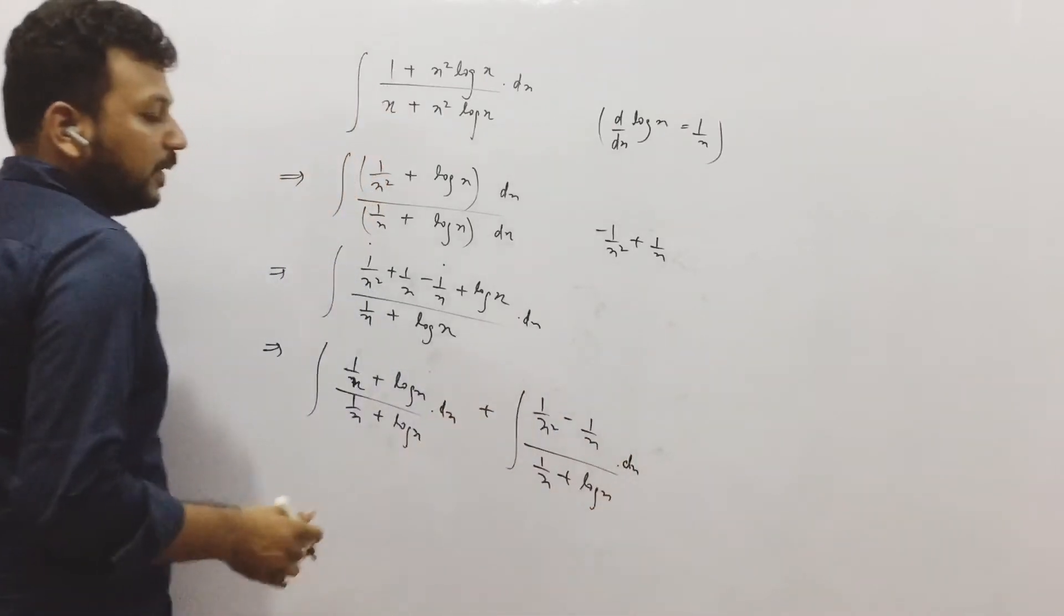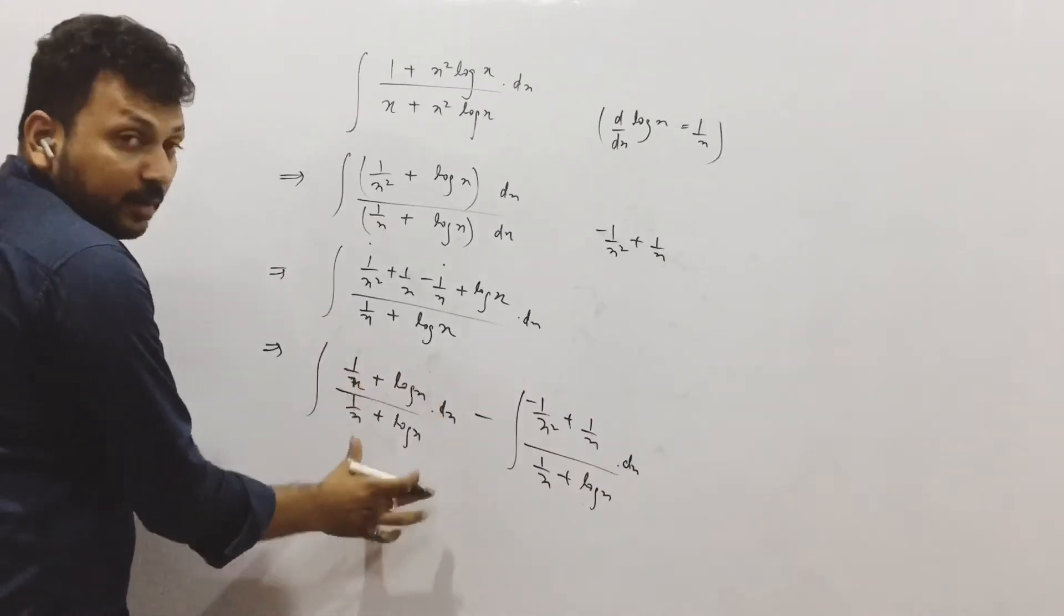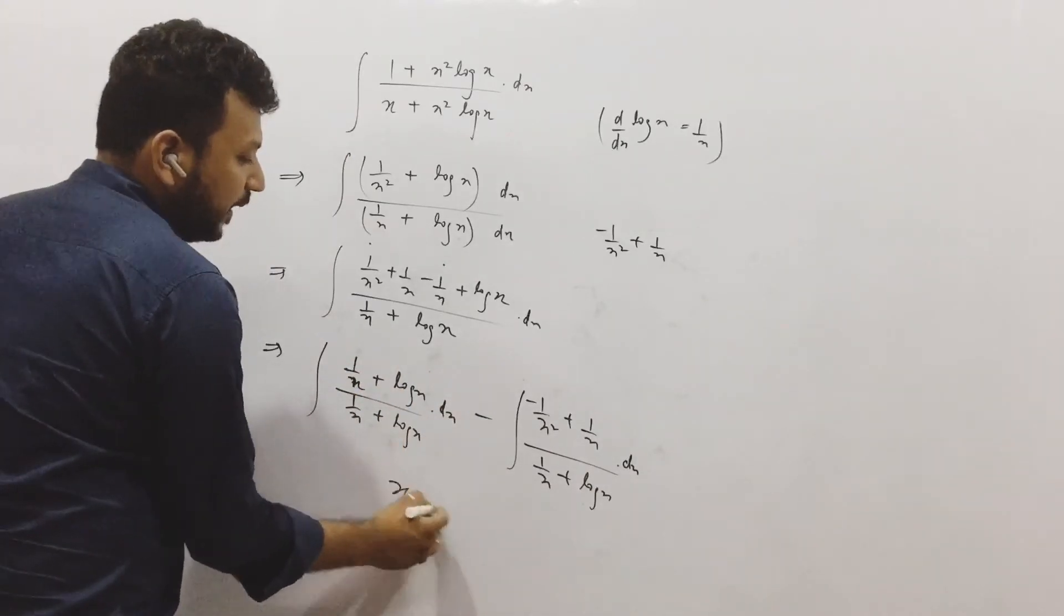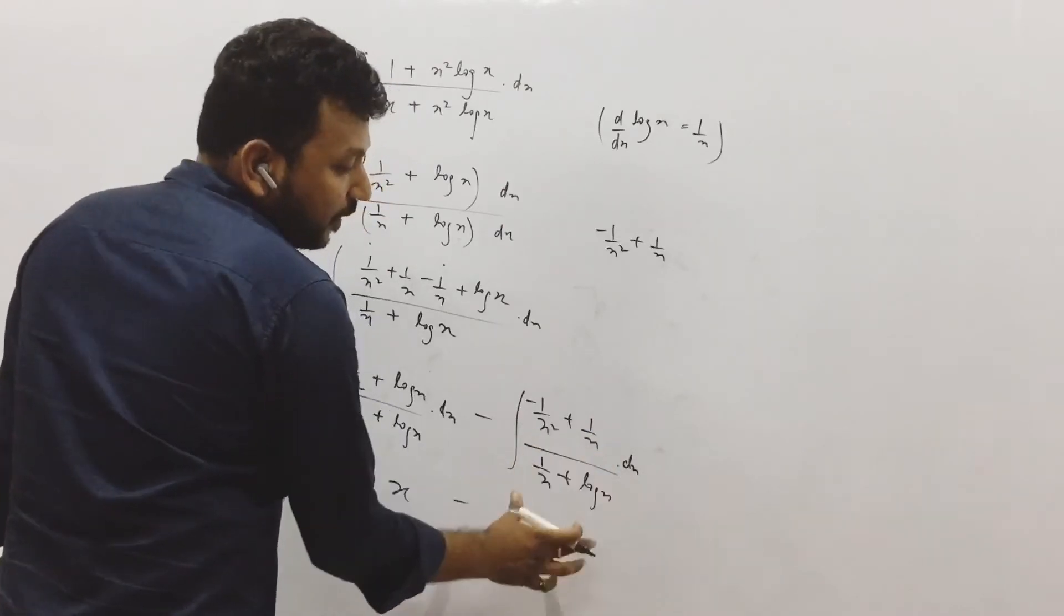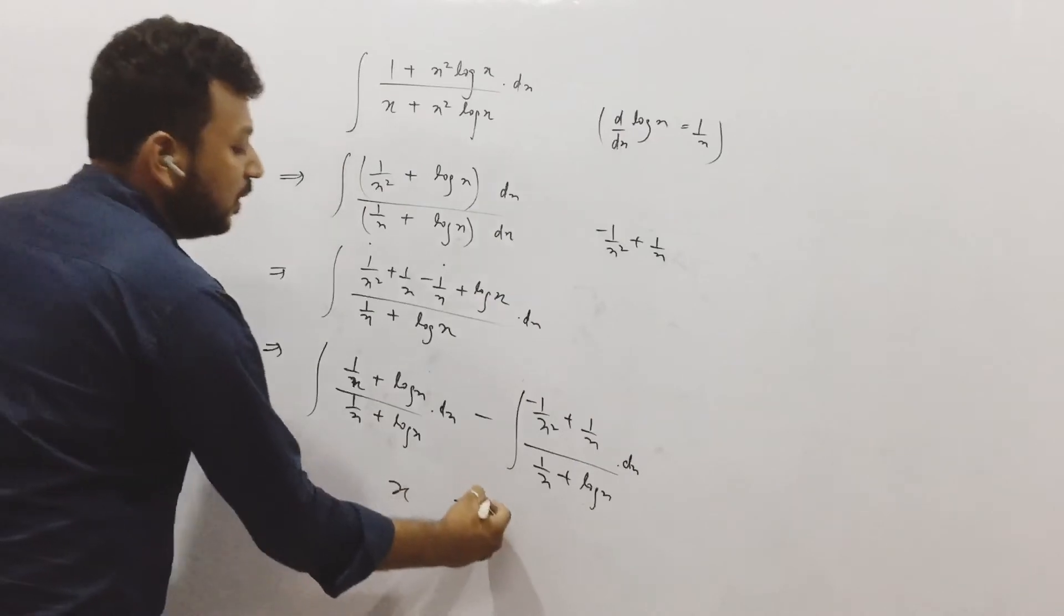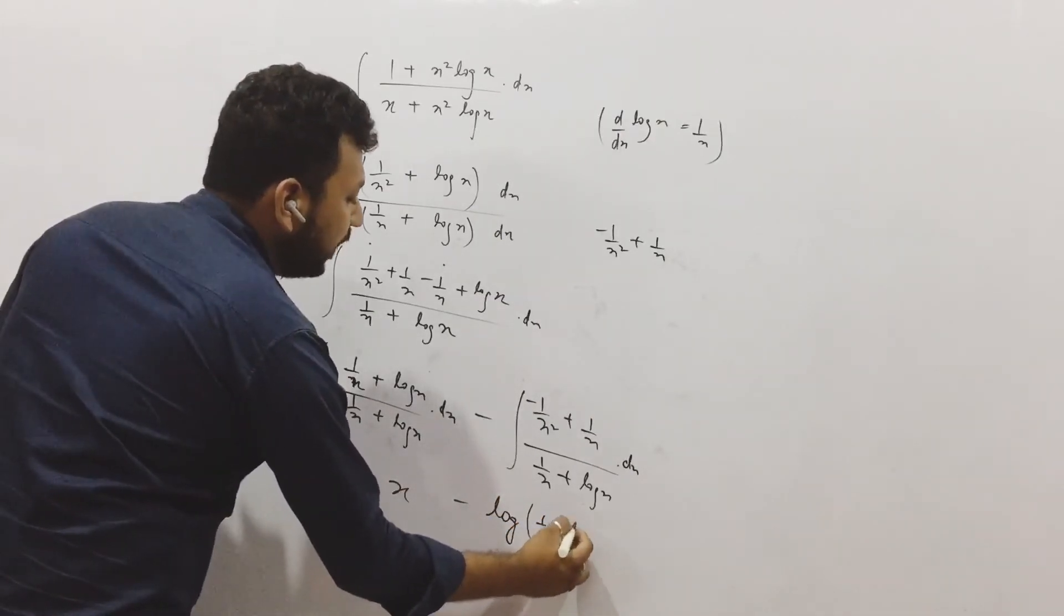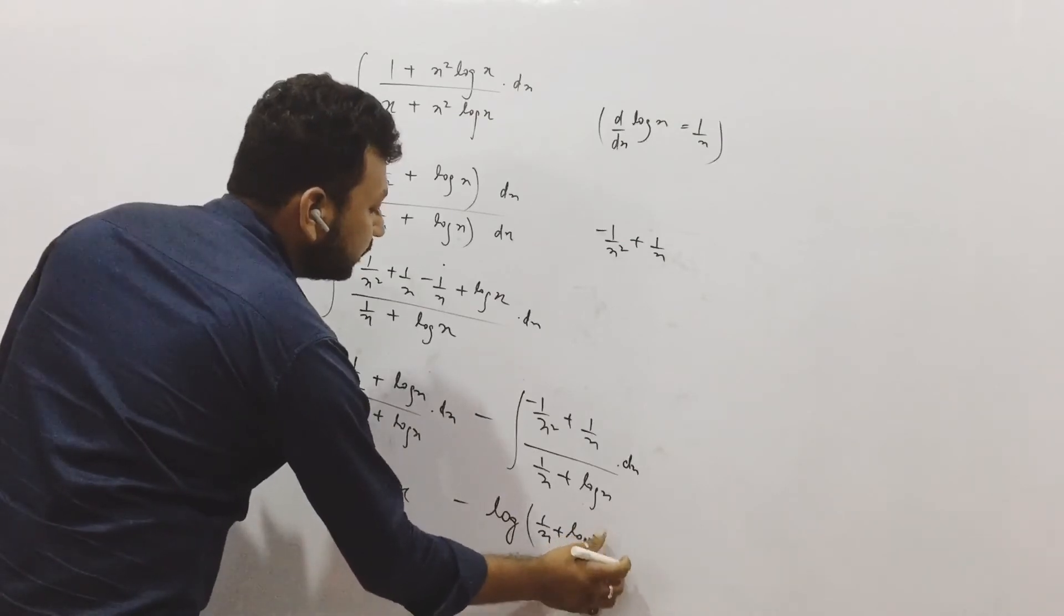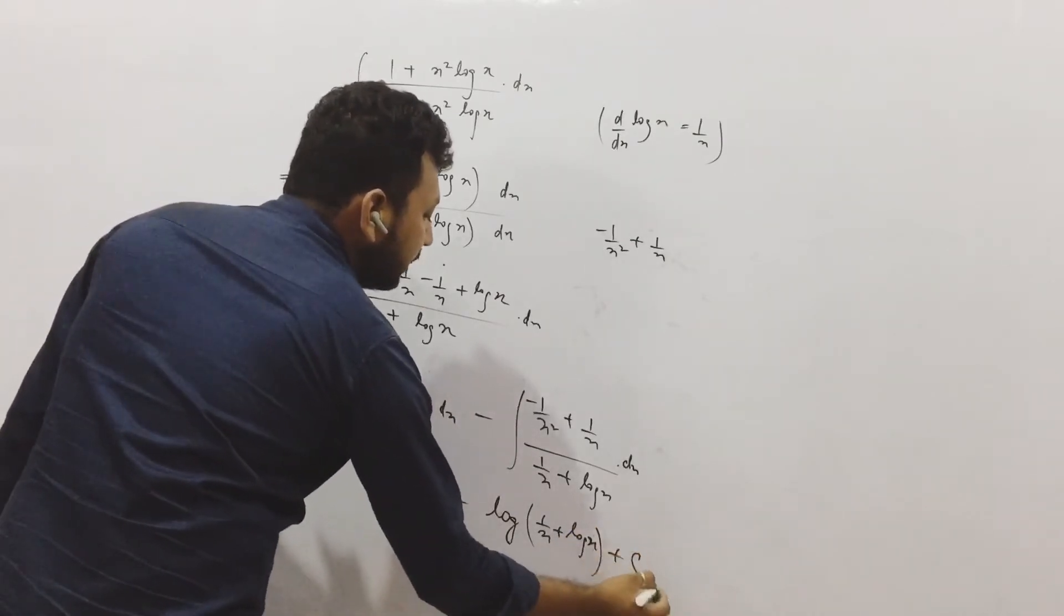I separated the other things. If I take minus sign as common, I have this right. Now this gets cancelled, and into dx integration it becomes x minus. Now you can see the derivative of this is this. If I consider it as t, it is dt by t. The integration of this is log t, that means log 1 by x plus log x. Here is one point, plus c. In indefinite integration you always get the c.